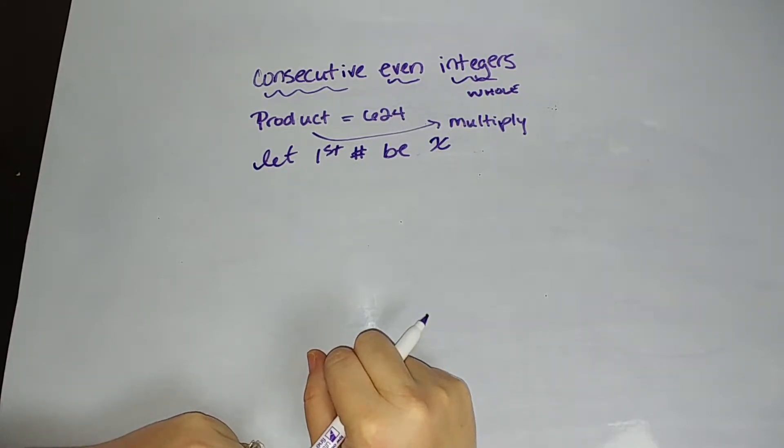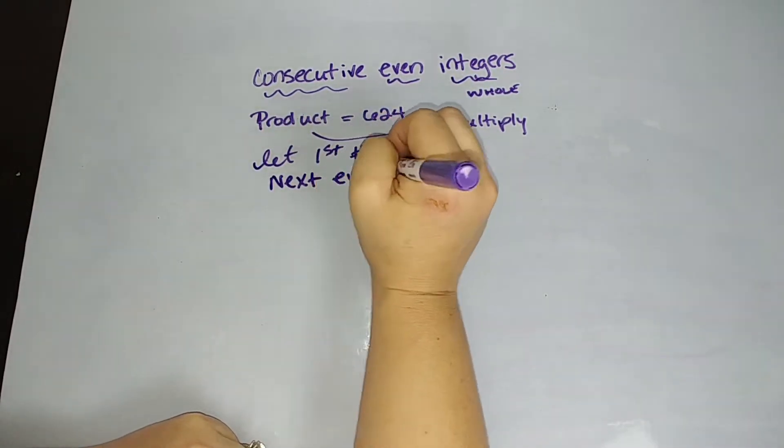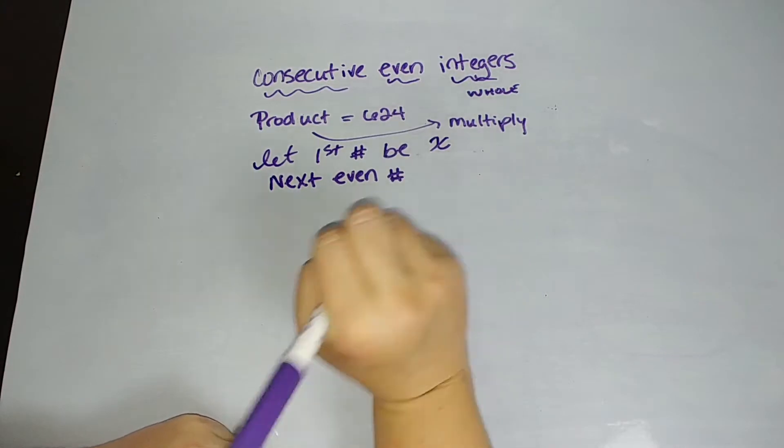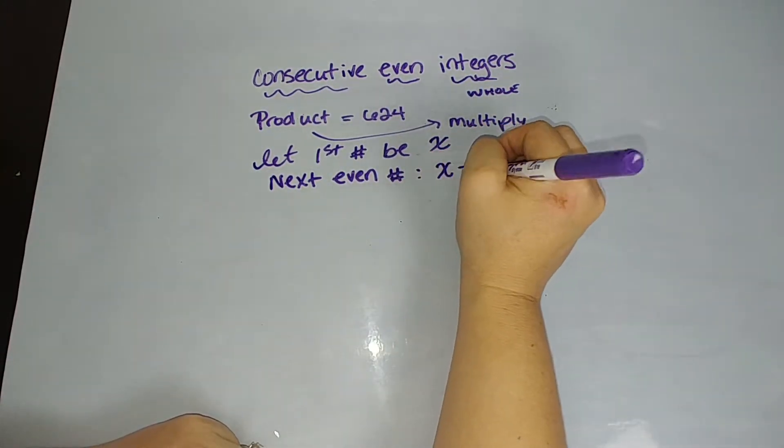It's an even number. So it's 2, it's 224, it's 3,000. It's some even number. If I want my next even number, the next even number is going to be 2 away because there's going to be an odd number in between. So it's going to be x plus 2.